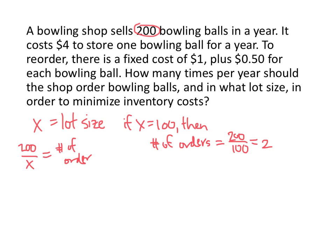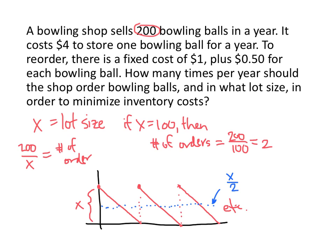We're told that it costs four dollars to store a bowling ball for one year. And again the idea here is that if x is my lot size, then the number of bowling balls I have in my inventory starts off at x. So this vertical distance here is x. At the beginning of the year I have x in my storage. And then over the course of the year I sell those bowling balls. And then when I run out, I have to order again. And then my bowling balls go down again, and then I have to order again, and then I sell those bowling balls, and so on. So the average number of bowling balls I'm storing at any given time is actually half of x. If I draw a horizontal line here, that's going to be x over 2. That's my average number of stored items.